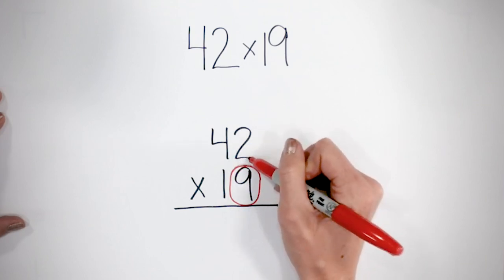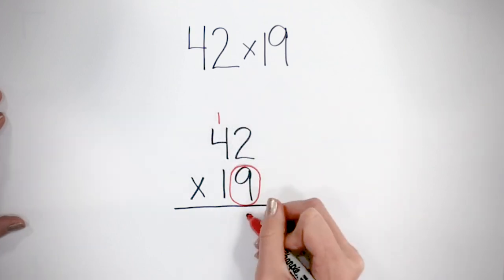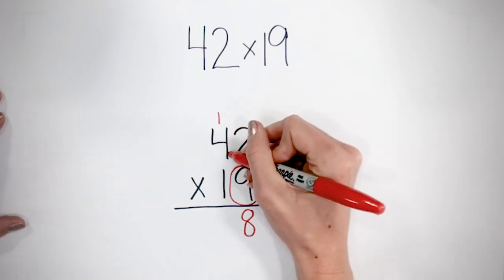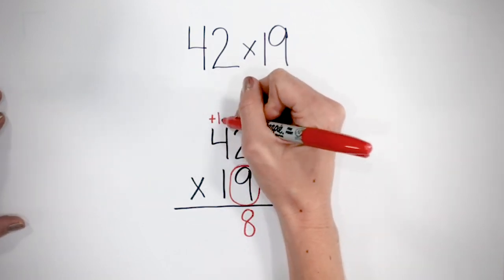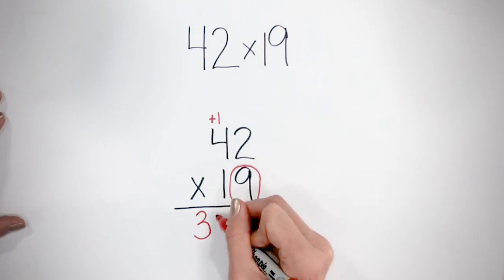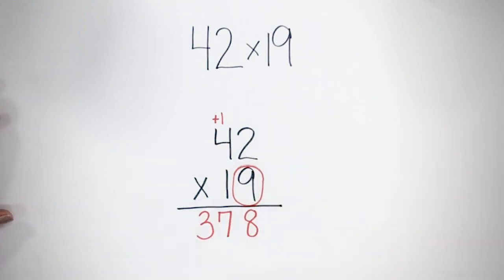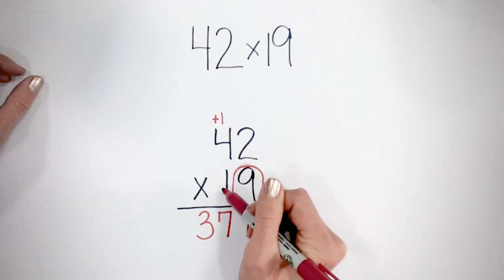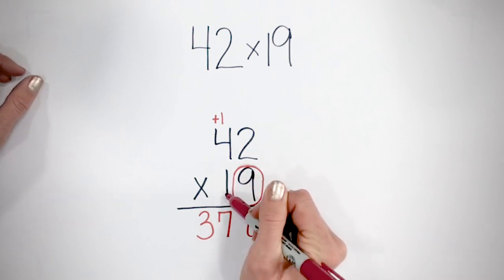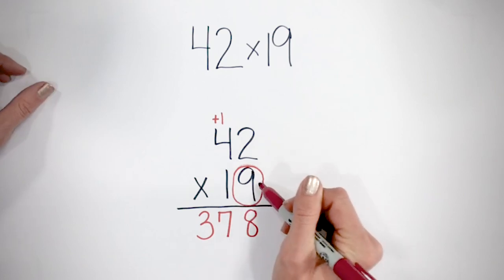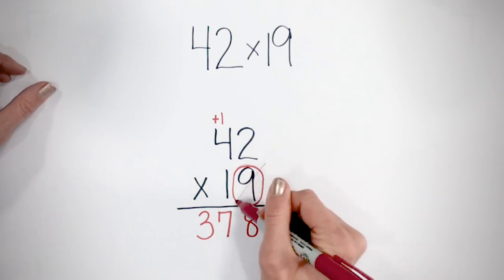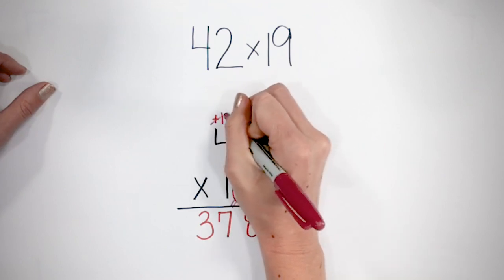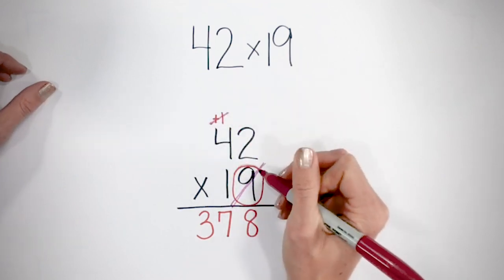We begin to multiply the nine by each number on top. Nine times two is 18 — we carry the one and bring down the eight. Nine times four is 36, plus the one we carried is 37. Now I'm grabbing my next color to work with my tens place. But before I get to my tens place, I'm done with my ones, so I'm going to cross out my ones place and cross out anything I carried from my ones place so I don't get confused.